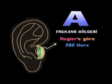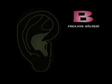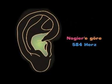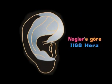A frekans bölgesi Nojiye'ye göre 292 Hz ile taranır. B frekans bölgesi 584 Hz ile taranır. C frekans bölgesi, gördüğümüz büyük bölge, Nojiye'ye göre 1168 Hz ile taranır.